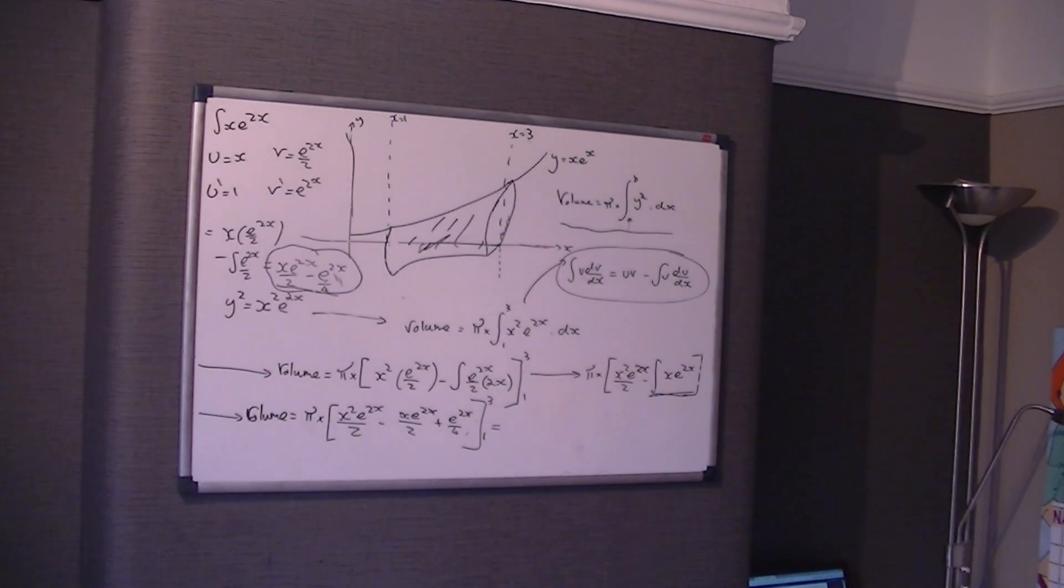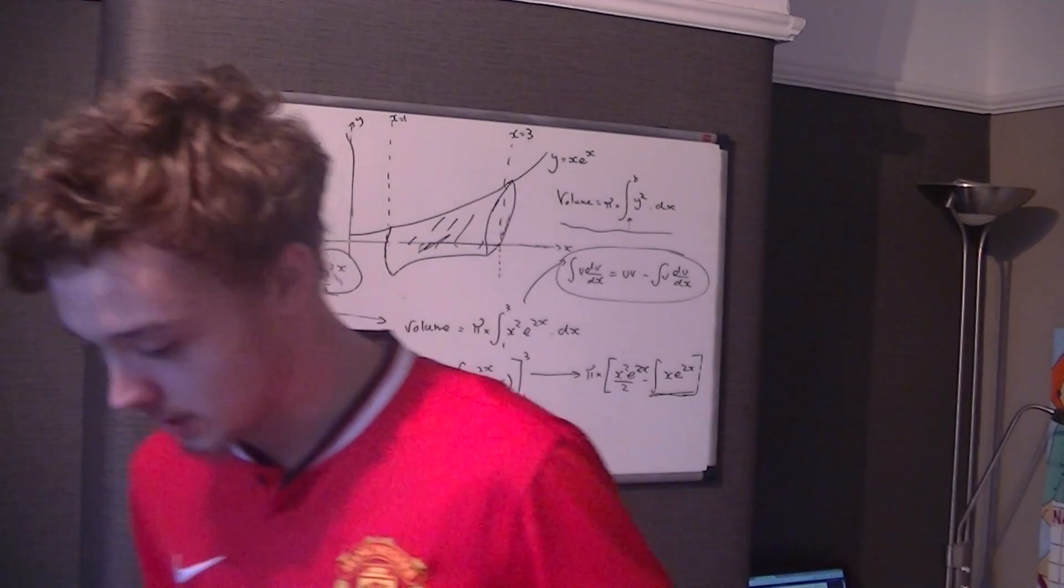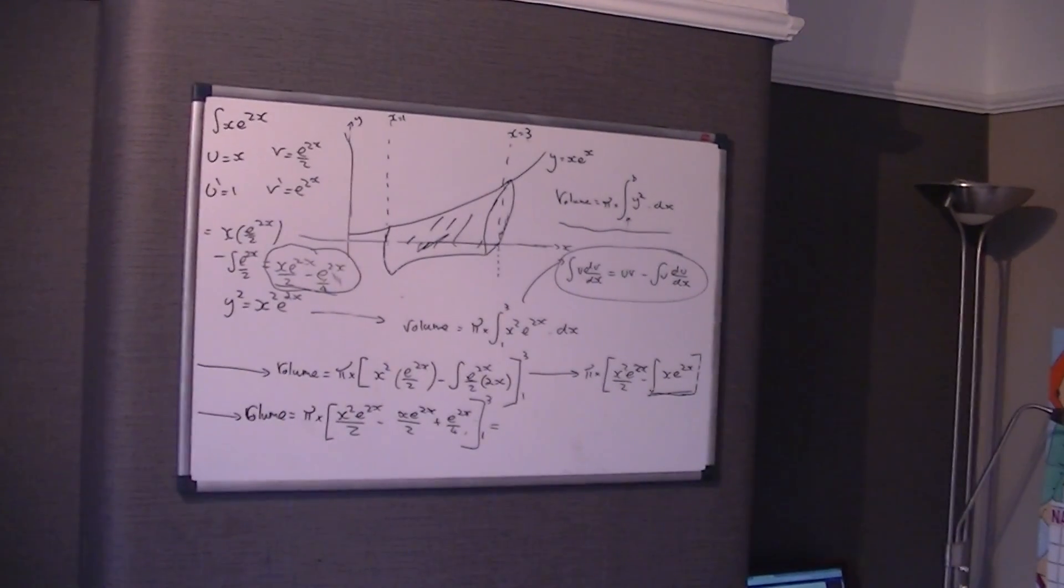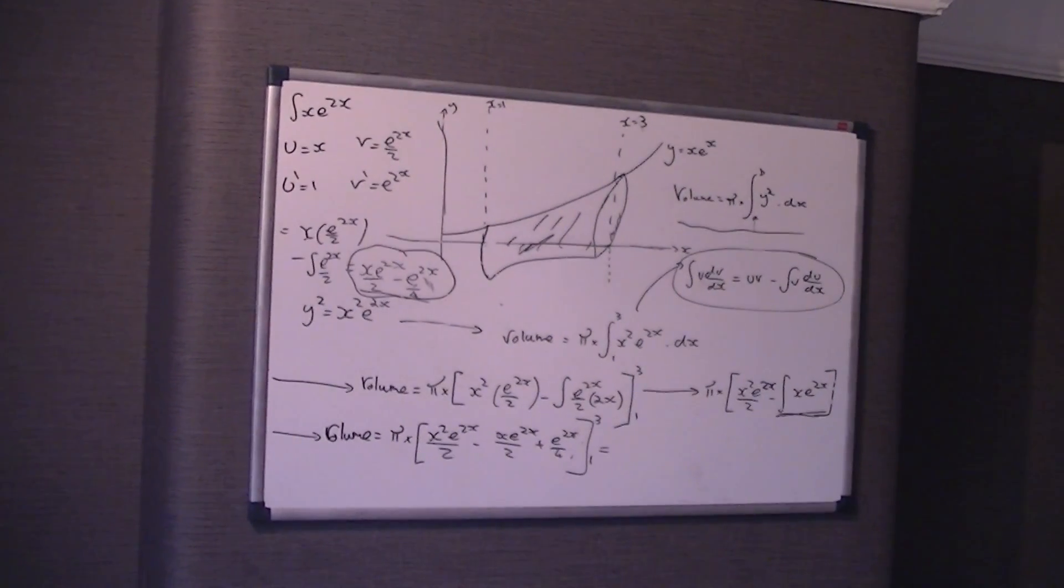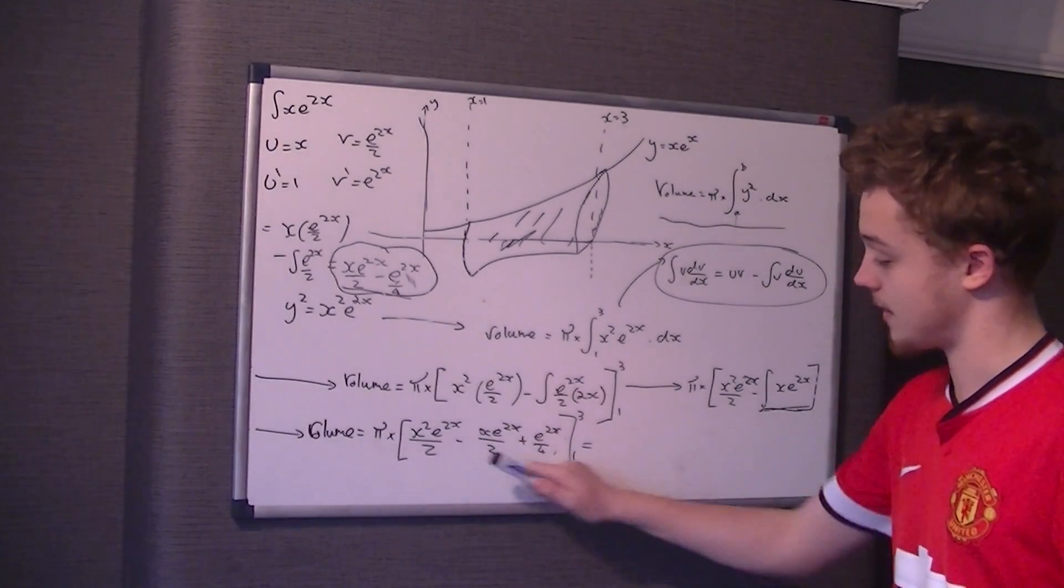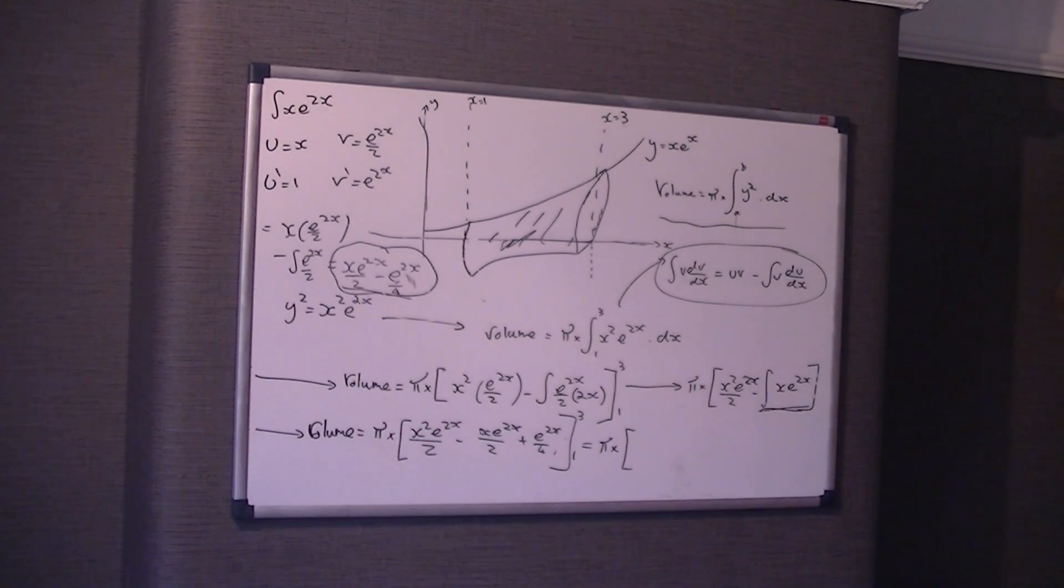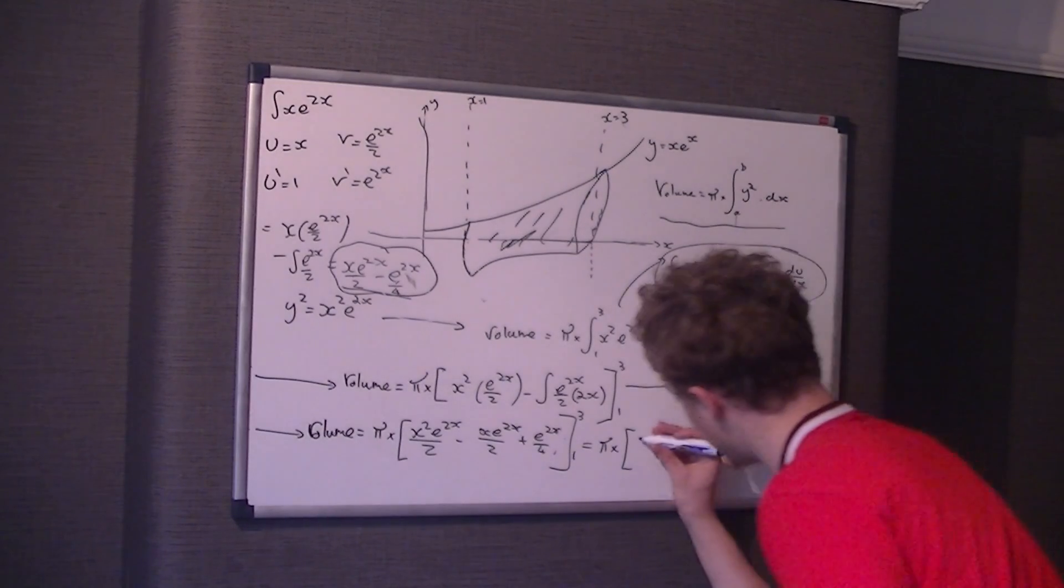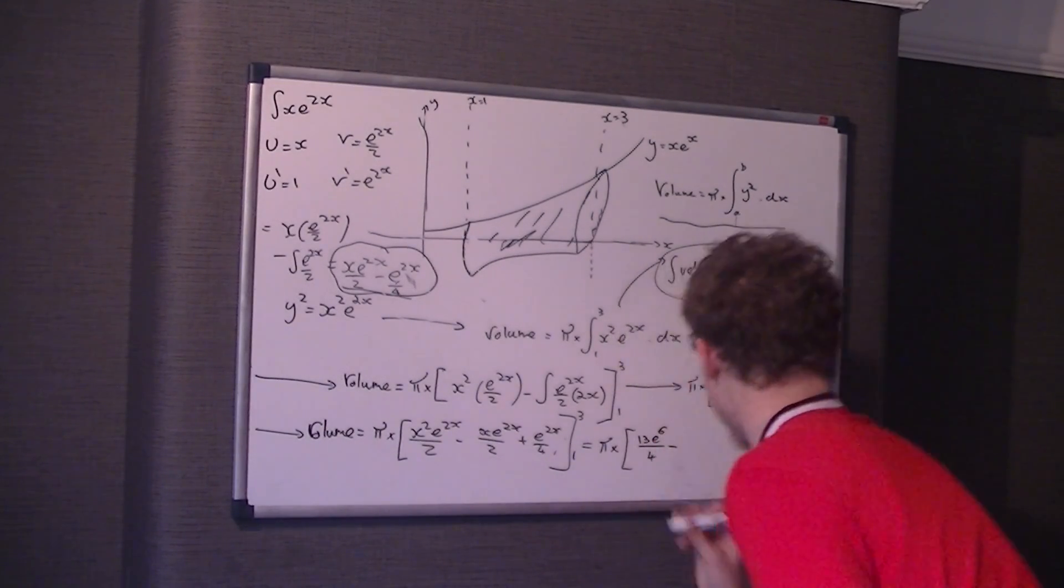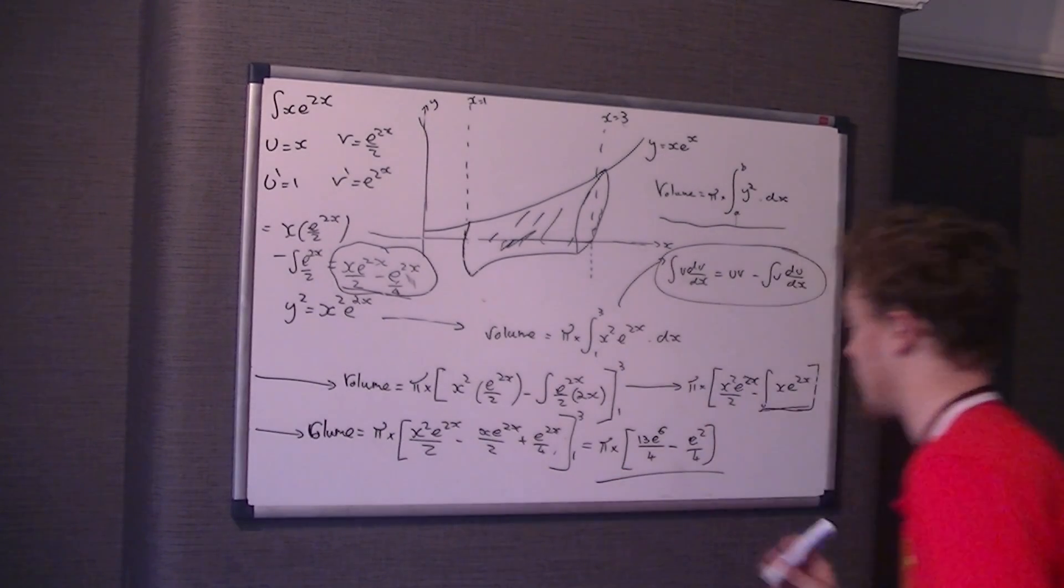I don't actually have room to do this. What I'm going to do is just throw the answer in. The reason I'm skipping this out is because it's the simplest, it's a C2 method really. So it's just a case of simple C2, subbing in x to be 3 and then x to be 1, taking those two answers away, and you should get π times e to the 6 on 4 take e squared on 4. And that is your final answer.